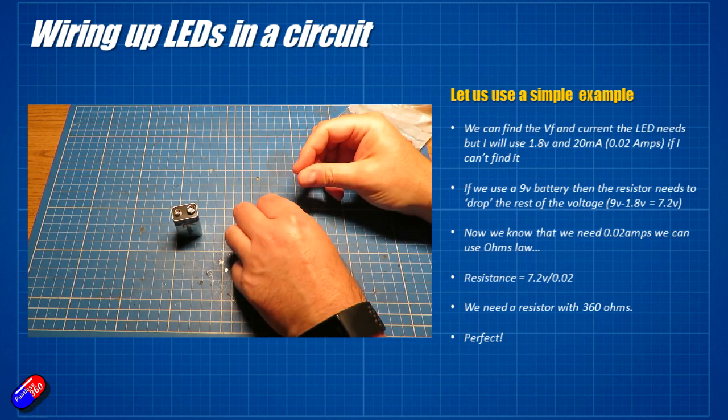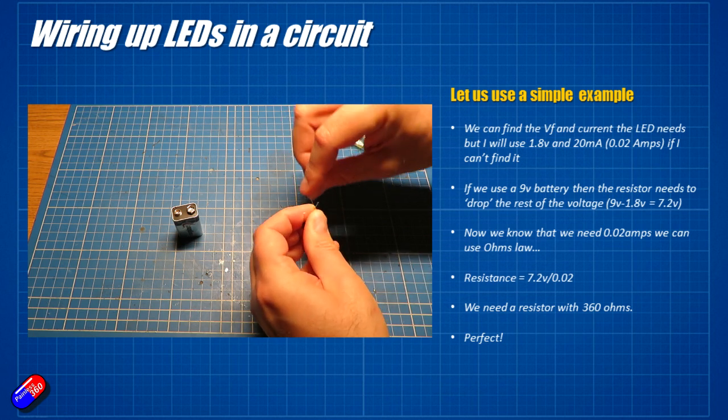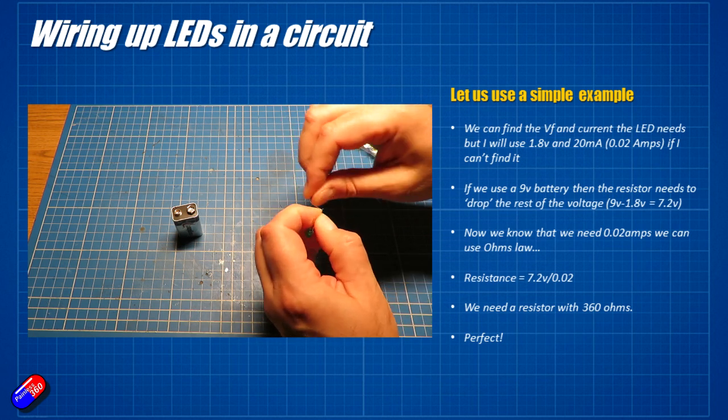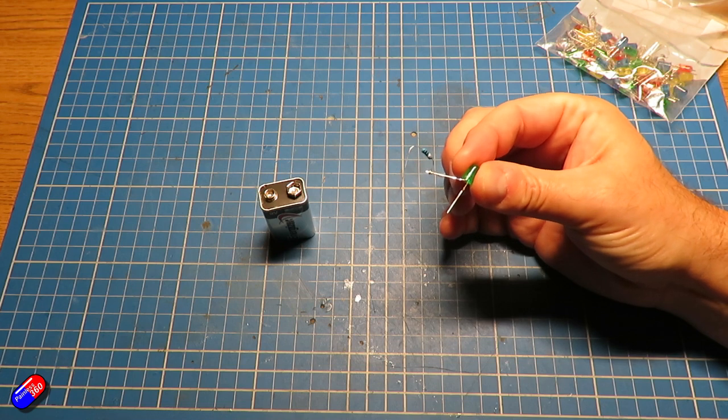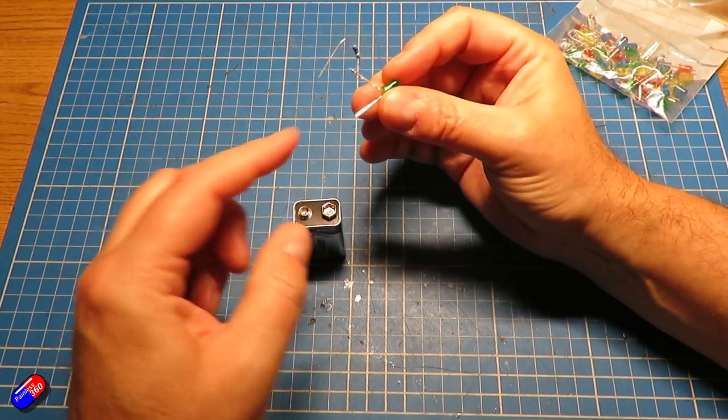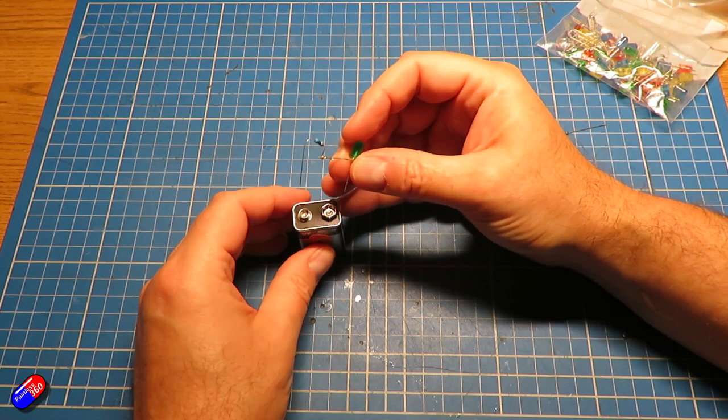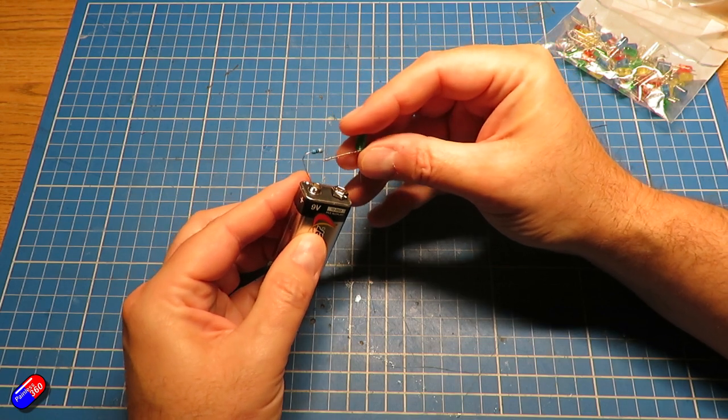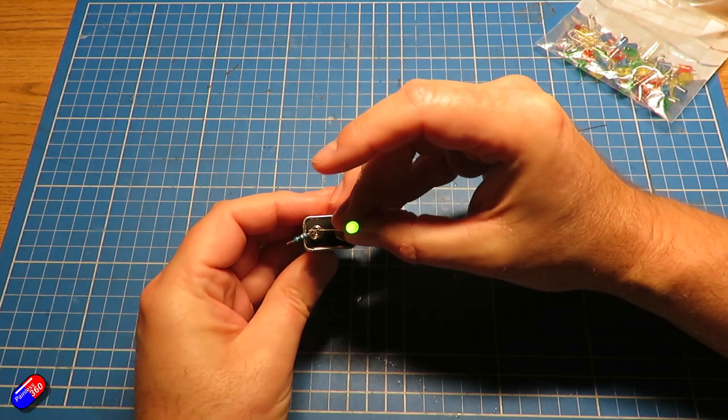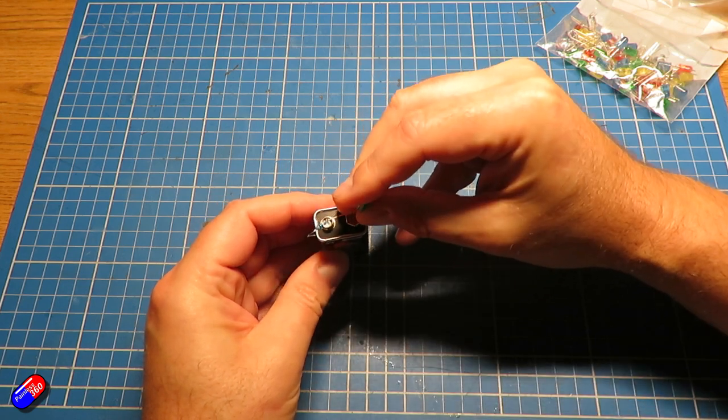So I'm going to just wind this around the positive lead. Obviously you'd use wires and stuff if you're going to do it for real. So if I now plug this onto the battery, again make sure that the negative or the cathode of the LED is on the negative side of the battery, positive is on the positive side, you'll see it light up and there it is lighting up and it's absolutely happy.